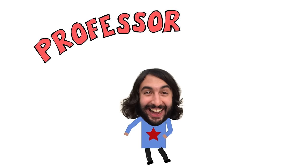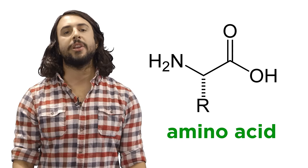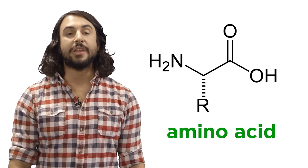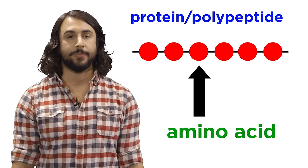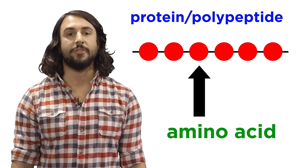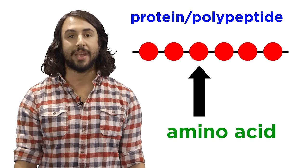Hey guys, it's Professor Dave. I want to tell you about proteins. So we know about amino acids and these are the monomers that will form proteins which are also known as polypeptides. Proteins are polymers of amino acids and they are the most diverse type of biomolecule in your body.